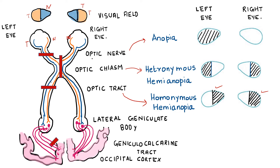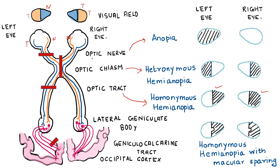Next, transecting at the level of the optic radiation or the occipital cortex. In this case we will also find homonymous hemianopia, but this time it will be with macula sparing — the macula will be spared. This is because the macula has a very large representation in the cortex, secondly it has bilateral representation, and also collateral blood supply. That is why clinically we find homonymous hemianopia with macula sparing.